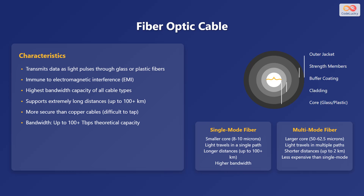Let's explore fiber optic cable. Fiber optic cable is a cutting-edge type of guided media that transmits data as light pulses through glass or plastic fibers. It offers immunity to electromagnetic interference or EMI, and provides the highest bandwidth capacity among all cable types. Fiber optic cables support extremely long distances, up to 100-plus kilometers, and are more secure than copper cables due to the difficulty of tapping into them. The bandwidth capacity of fiber optic cables can theoretically reach 100-plus terabits per second.